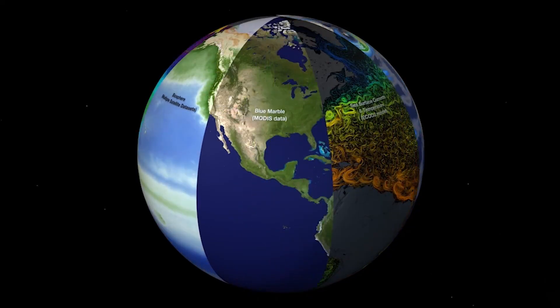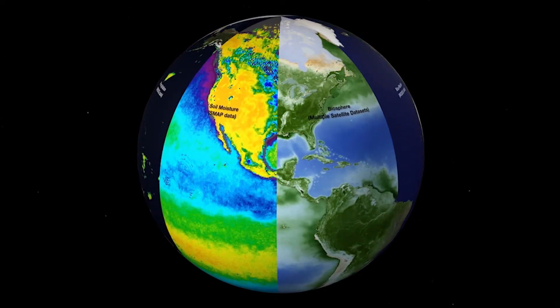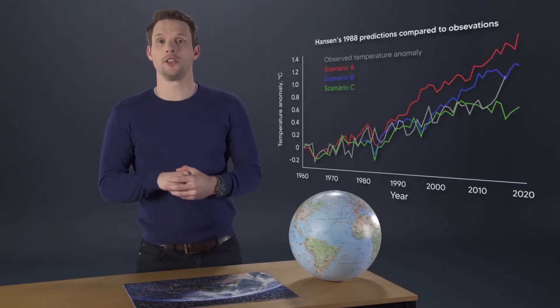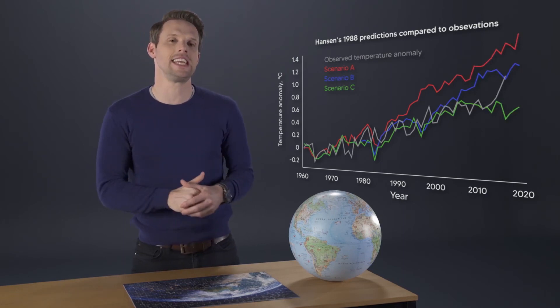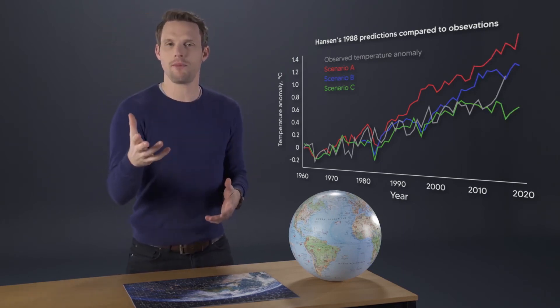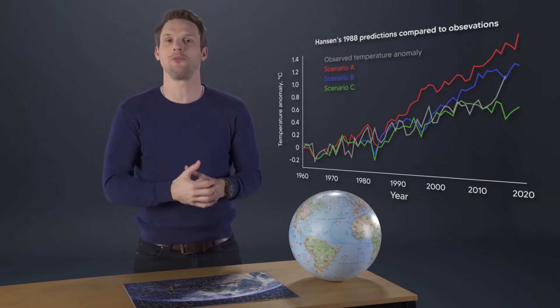Modeling the climate is a complex job — there are just so many interactions going on. These models have been tested on the past climate in order to be sure that they're strong enough to predict the future. And what we see today supports the models. These are three different scenarios built by James Hansen in 1988.